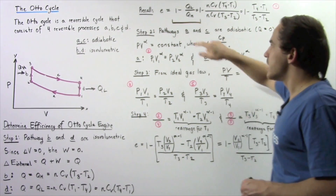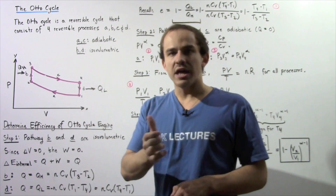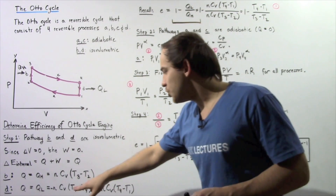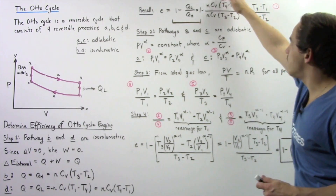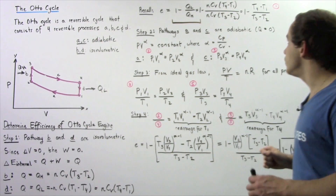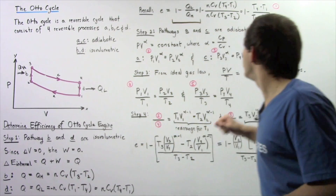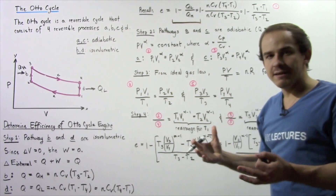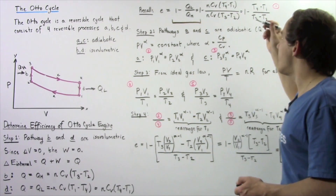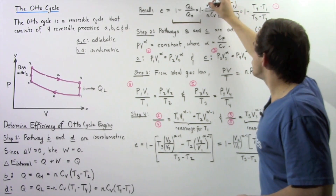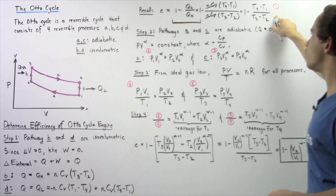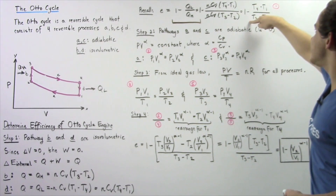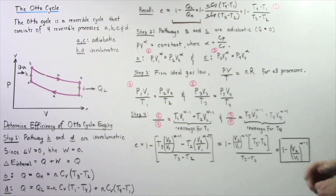The efficiency of any heat engine, including the Otto cycle engine, equals 1 minus QL divided by QH. Substituting QL as N·Cv·(T4 − T1) and QH as N·Cv·(T3 − T2), we note that N and Cv are the same in both terms since we have a closed system. These cancel out, leaving the efficiency equal to 1 minus (T4 minus T1) divided by (T3 minus T2). Let's call this equation 1.